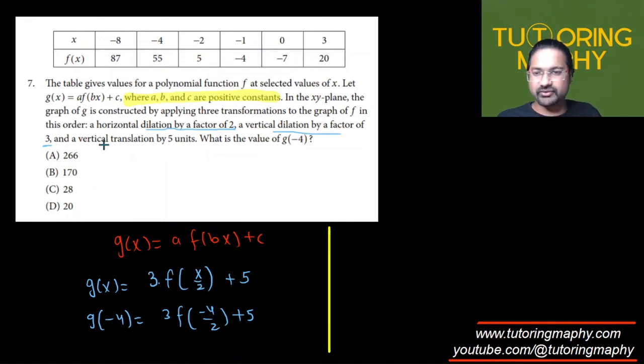So g of negative four is now going to be equal to three times f of negative two plus five.